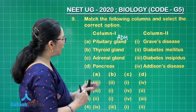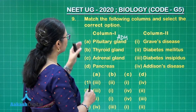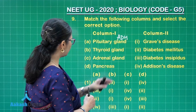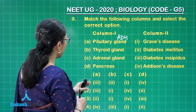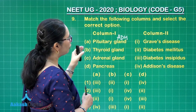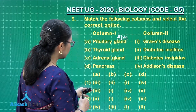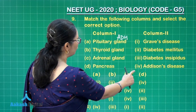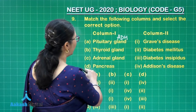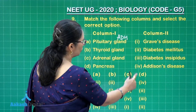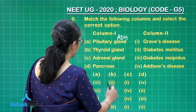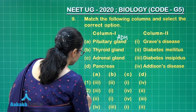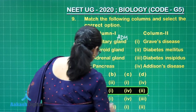So matching these choices: A matches with 3, B matches with 2, C matches with 1, and D with 4 — wait, let me clarify: A matches with 3 and 2, B matches with 1, C with 4, and D with 2. So the correct choice is option 2.